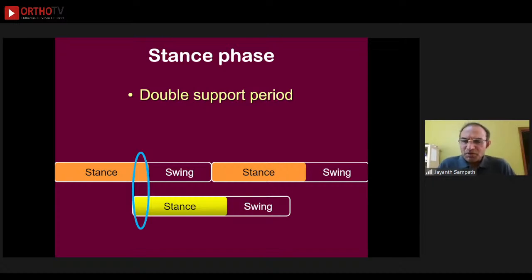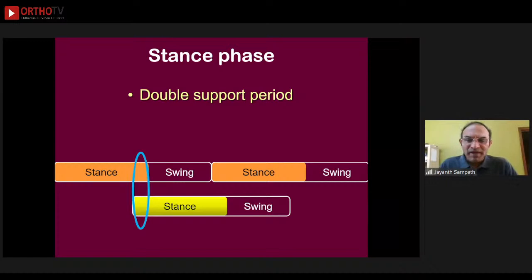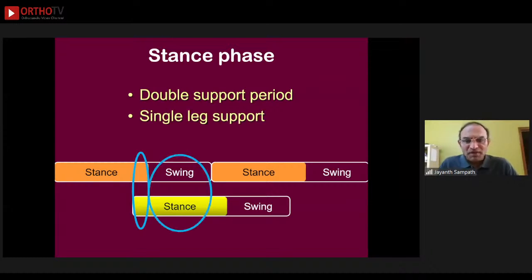Otherwise we'd be hopping. In order to give this reciprocal gait, there is a carefully coordinated timing and interplay between the gait cycles of the right and left lower limbs. Putting the two gait cycles side by side, we can see that there are specific periods of overlap when the stance phase of both lower limbs coincide — these are called double support periods when both legs are in contact with the ground. After the first double support period, there is a period called single leg support.